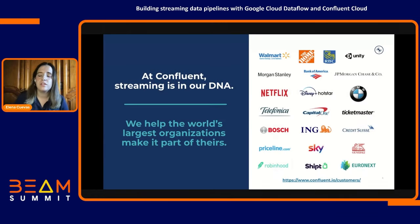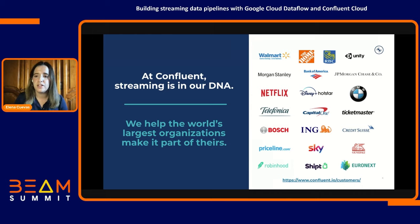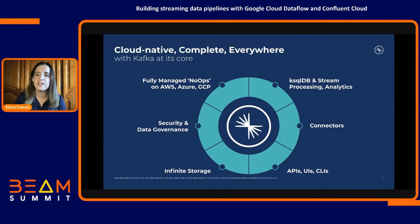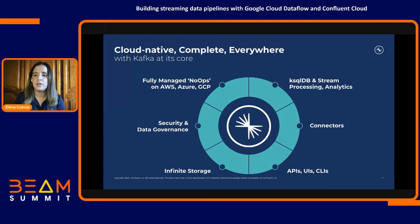At Confluent, we are helping the world's largest organizations make streaming part of their own DNA. Here are a few logos you might recognize from our customers. Whether you're shopping, making a payment, or driving a car, it's pretty likely that somewhere there's a store powered by Kafka and Confluent behind the scenes. Though our journey started with Kafka, Confluent is much more than Kafka nowadays. Confluent is a cloud-native and complete platform for data in motion and event streaming, available everywhere — on AWS, Azure, and GCP as a fully managed service.